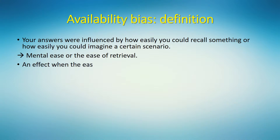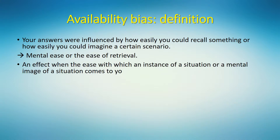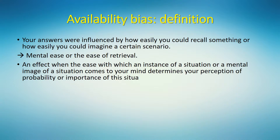This mental ease, with which an instance of a situation — or a mental image of a situation — comes to your mind, determines your perception of the probability or importance of that situation. In other words, things that you can recall, give examples of, or easily imagine are unconsciously perceived as more probable and more important. And this unconscious mental shortcut often leads us into an error. That's why we call it availability bias.